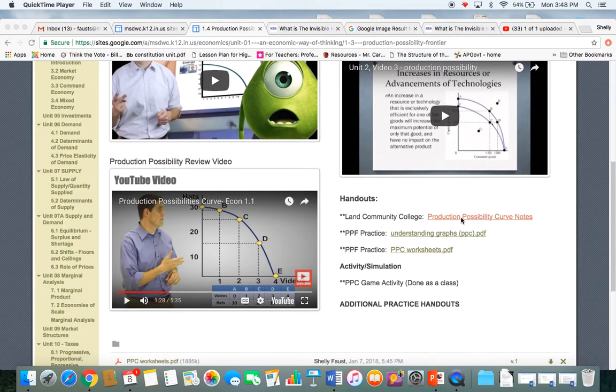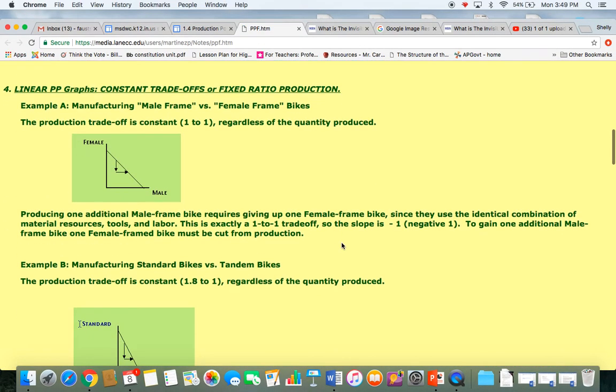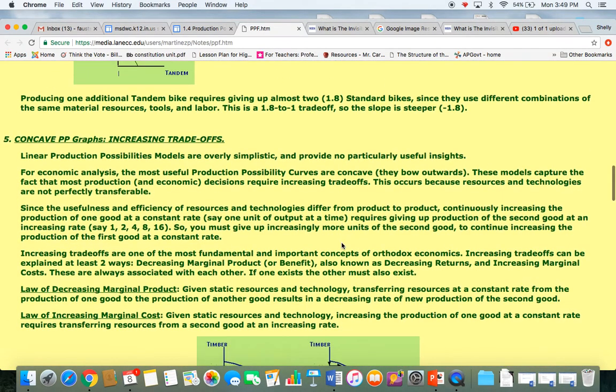Some handouts. This right here, I'll go ahead and pull that up. Really, really good resource. It is just some notes explaining the production possibility curves.